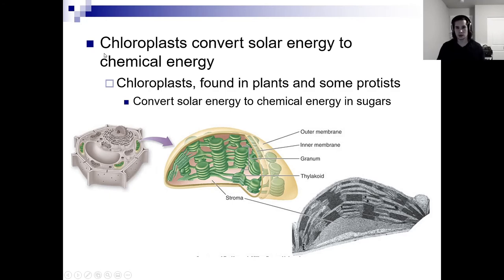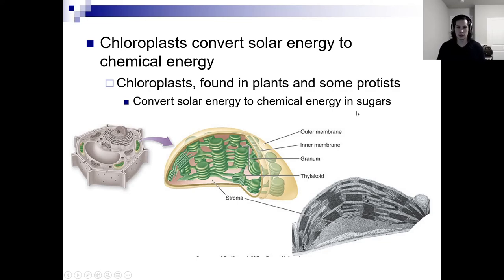Chloroplasts: if we're talking about anything that photosynthesizes, they'll usually contain chloroplasts. They're found in plants and some protists, and they convert solar energy into chemical energy in the form of sugars. We'll go into great detail about how they do that later.